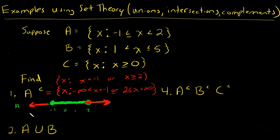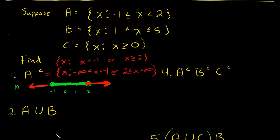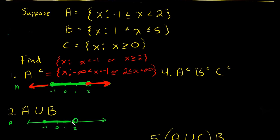Next, let's find A union B. Union means 'or,' so basically A or B. Let's draw out A: we have negative 1, 0, 1, 2, with an open circle at 2 and a closed circle at negative 1.